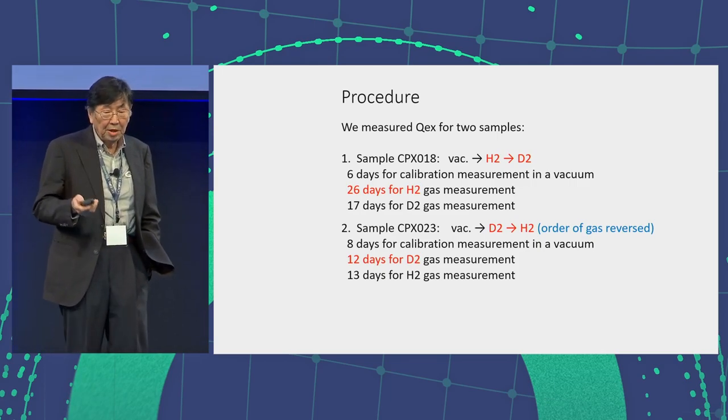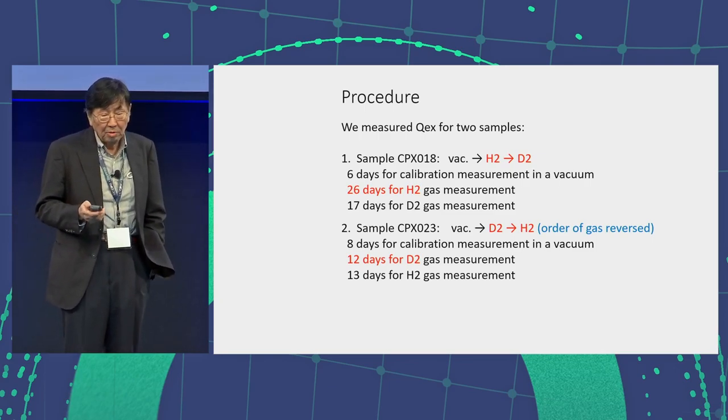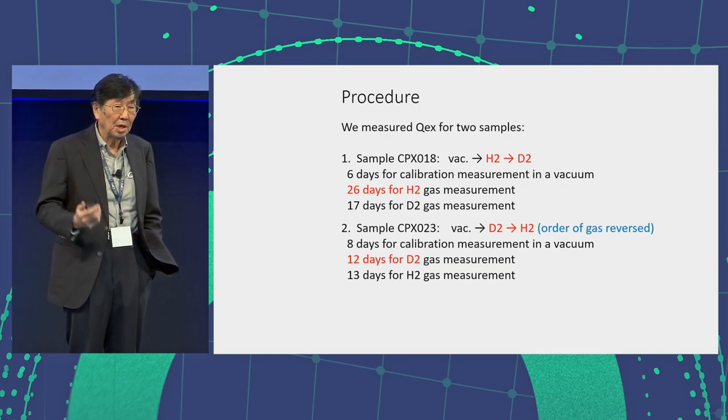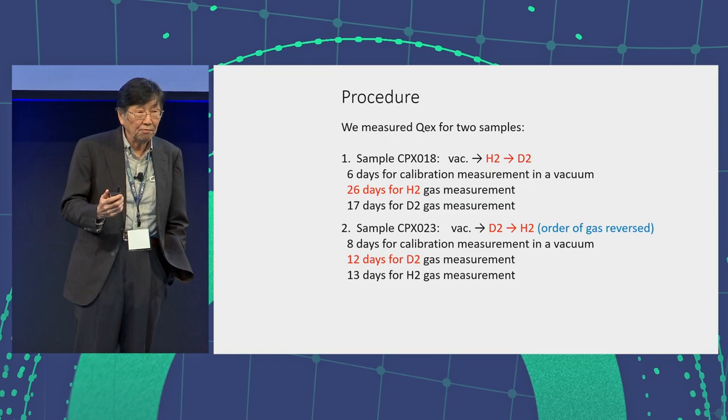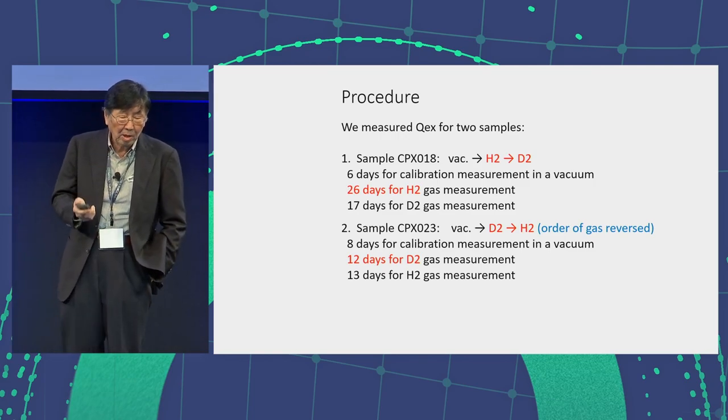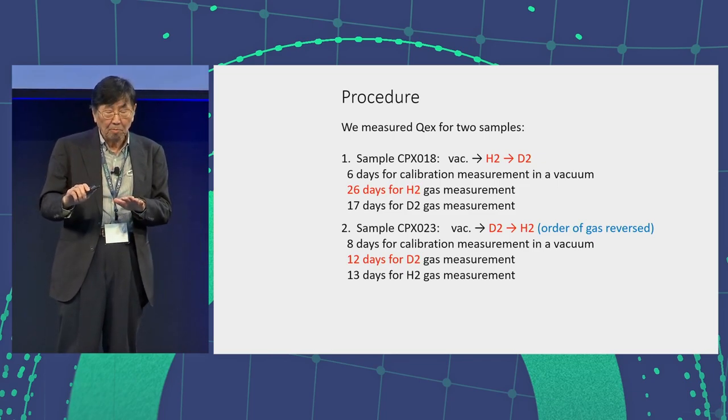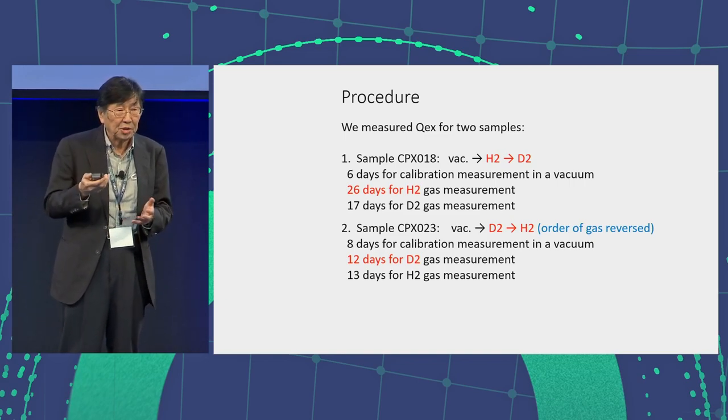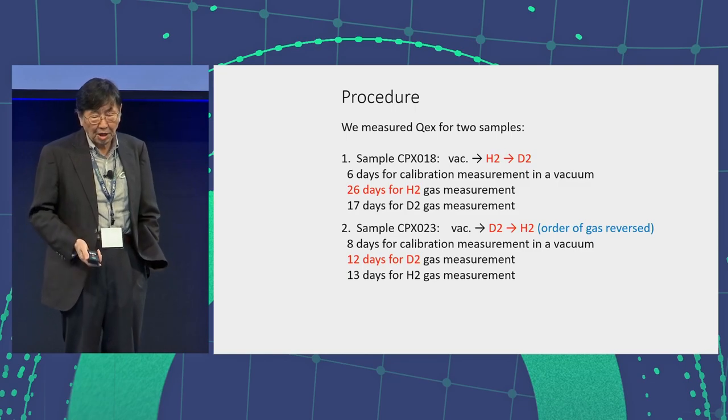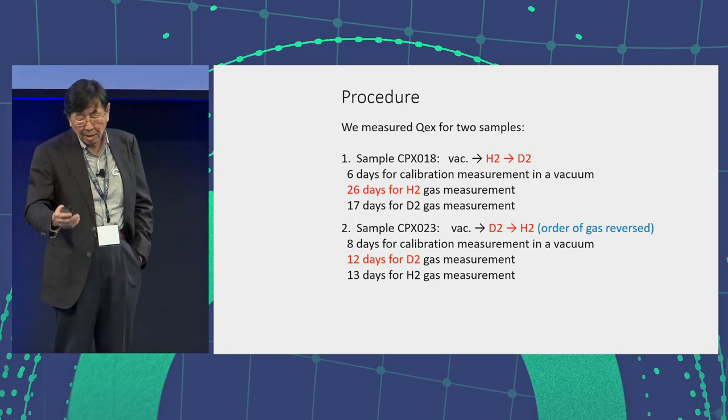Procedure: We measure the excess heat for two samples, one sample called CPX18. We measure first vacuum, it is the measurement for calibration run, and then introduce the hydrogen gas, and then 26 days for hydrogen gas measurement, and then switch to the deuterium gas. Number two sample called CPX23, we started vacuum again, because the calibration should be done for each sample. And then switch to the D2 deuterium gas, in this case, just order of gas reversed. And then after that, we changed that.